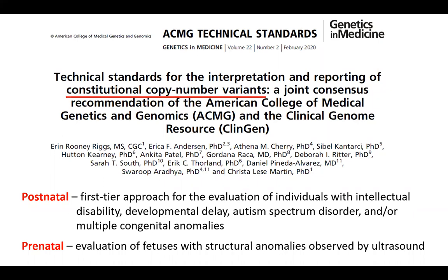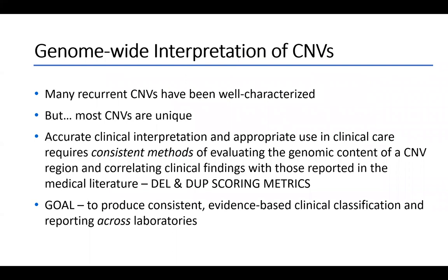We really wanted to bring everything home and wrap together what you've learned about how we put this information into a report in a way that's understandable to any clinician who ordered a genetic test, specifically related to copy number variants. This technical standard is for constitutional copy number variants, applied to both postnatal and prenatal samples. For postnatal, it's used as a first-tier approach for evaluation of individuals with intellectual disability, developmental delay, autism spectrum disorder, or multiple congenital anomalies. For prenatal, CNV analysis is primarily used for fetuses with structural anomalies observed by ultrasound.